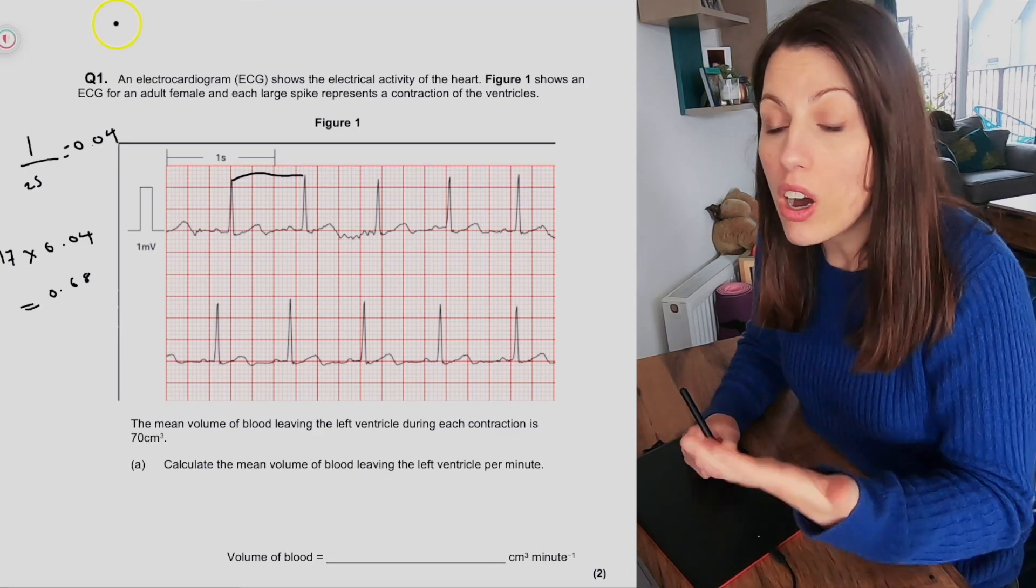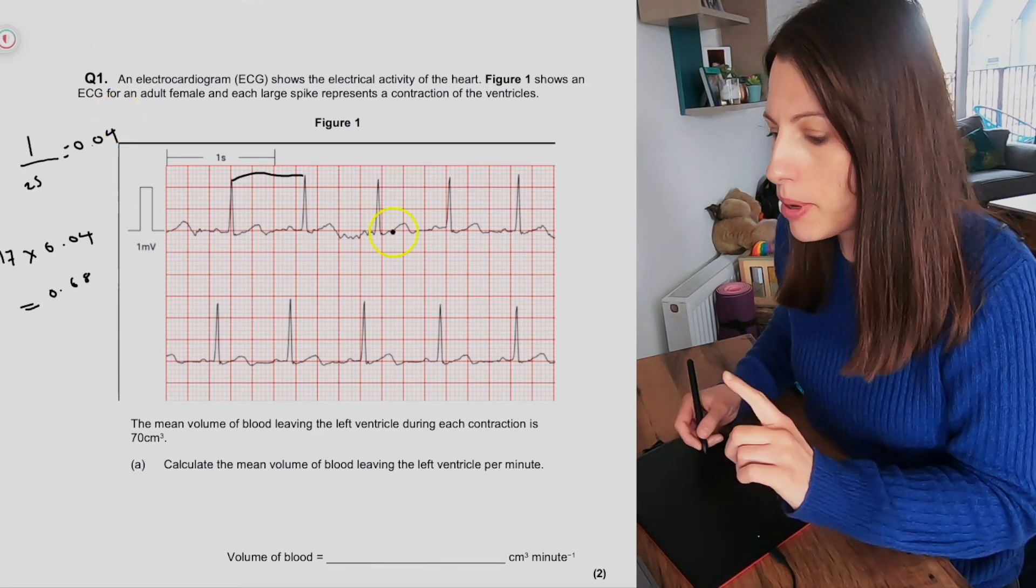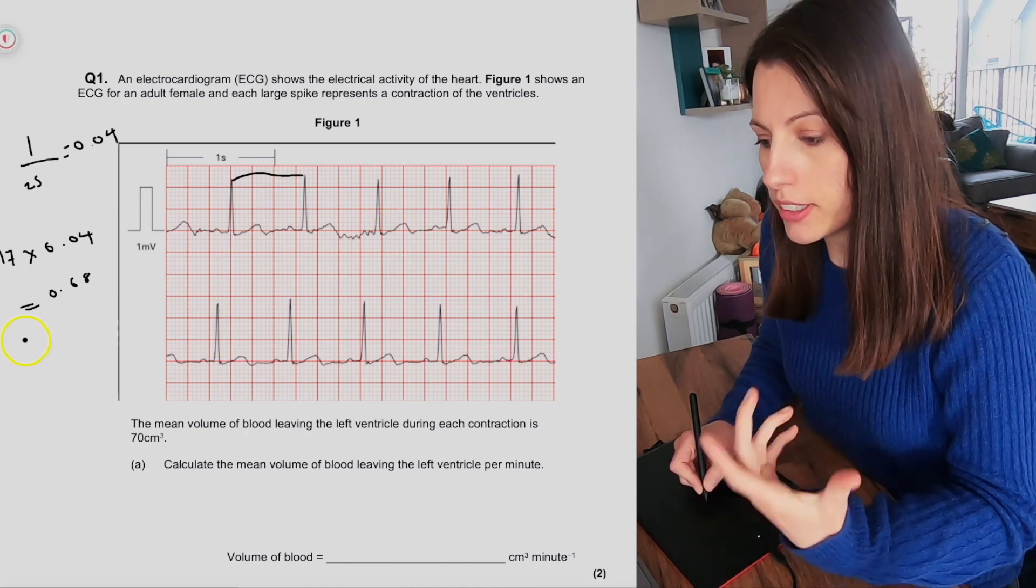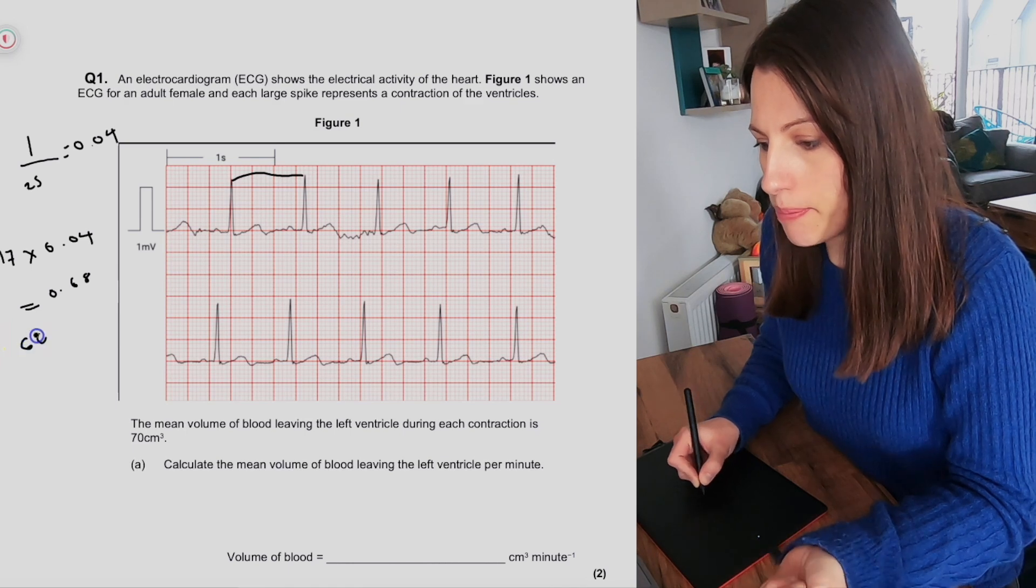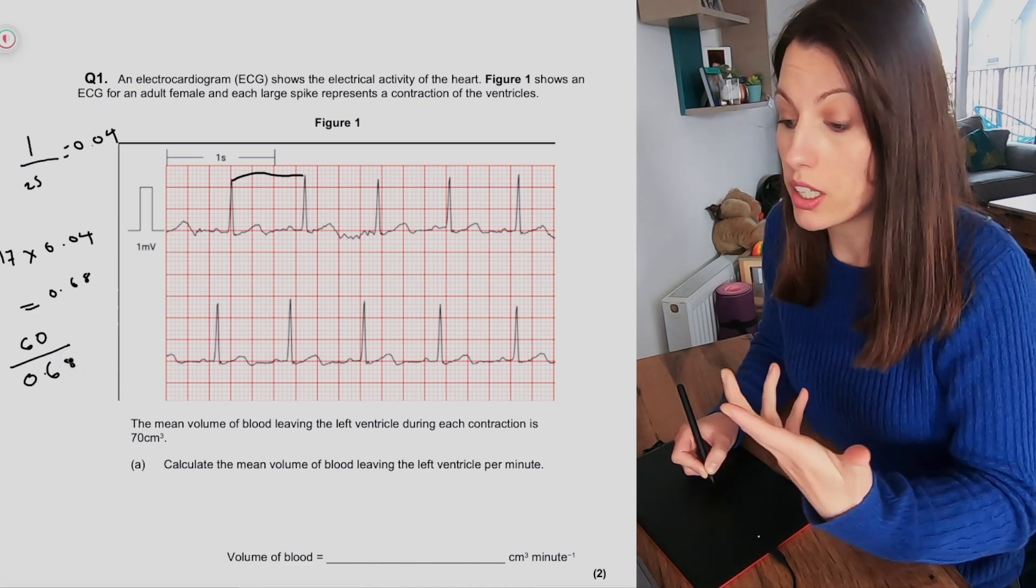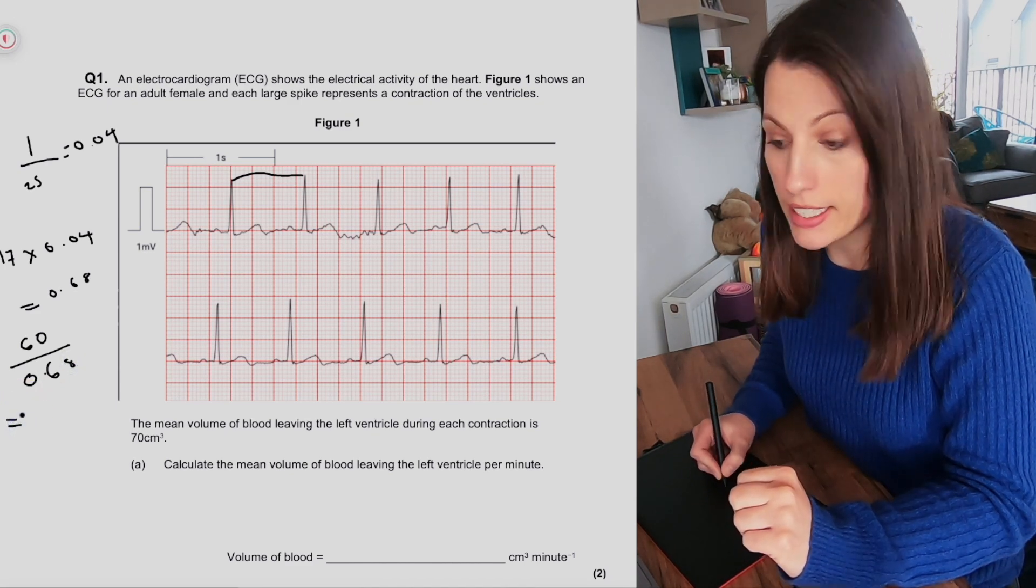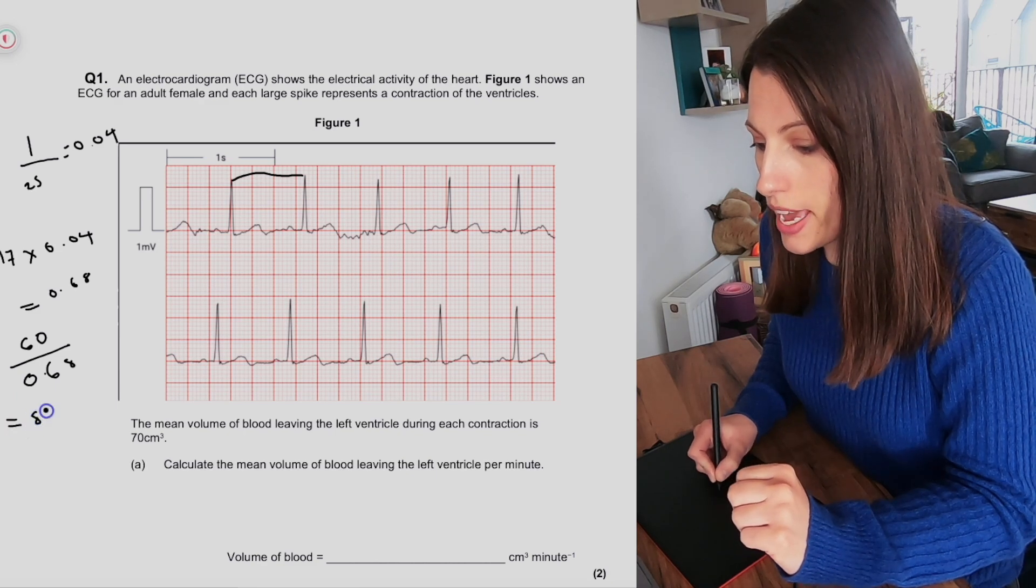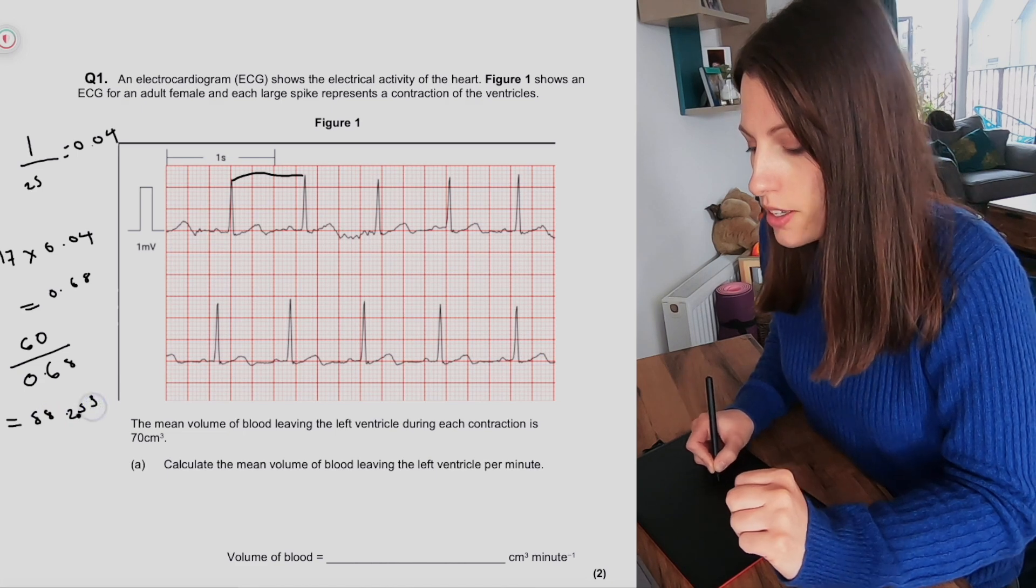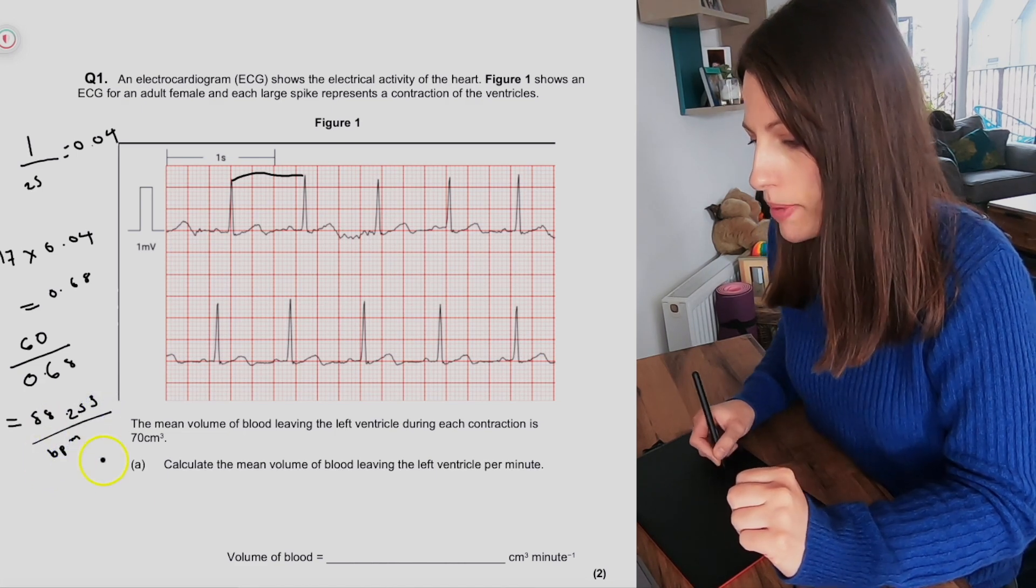So one cardiac cycle takes 0.68 seconds, but we want to know beats per minute. So there are 60 seconds in a minute, and let's see how many times that would fit, or how many times one cardiac cycle would fit into a minute. So 60 divided by 0.68, and that comes to 88.253. So that is our heart rate in beats per minute.